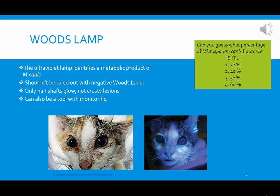A very common tool used to diagnose Microsporum canis is the Woods lamp examination, which uses ultraviolet light to identify Microsporum canis by looking at the metabolic products of this organism. We should not allow a negative Woods lamp exam to rule out the possibility of the patient having this condition. What we see are hair shafts that will glow — not typically in the crusting area but the hair shafts themselves. This tool can also be used to monitor treatment progression by checking for fewer and fewer fluorescing lesions.